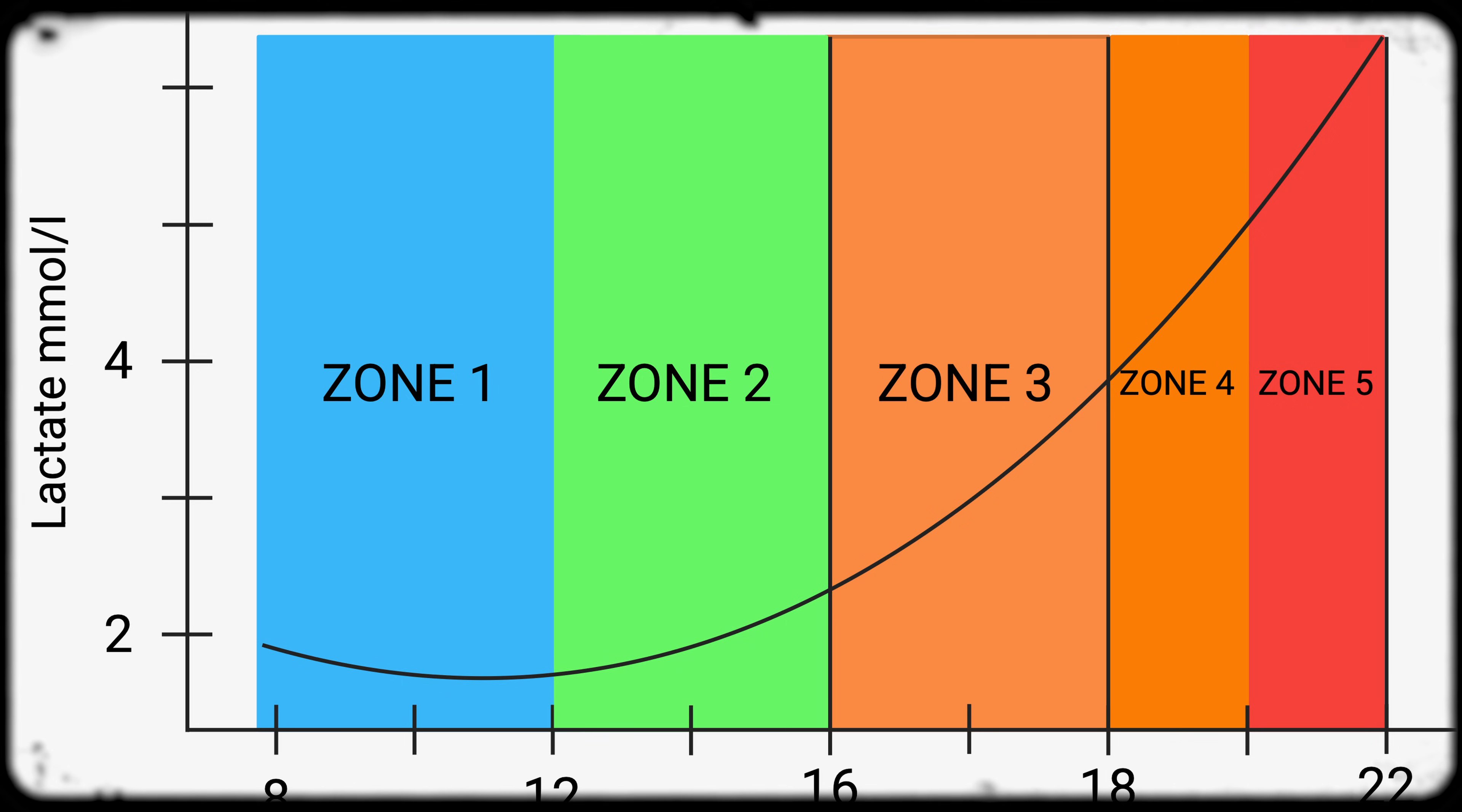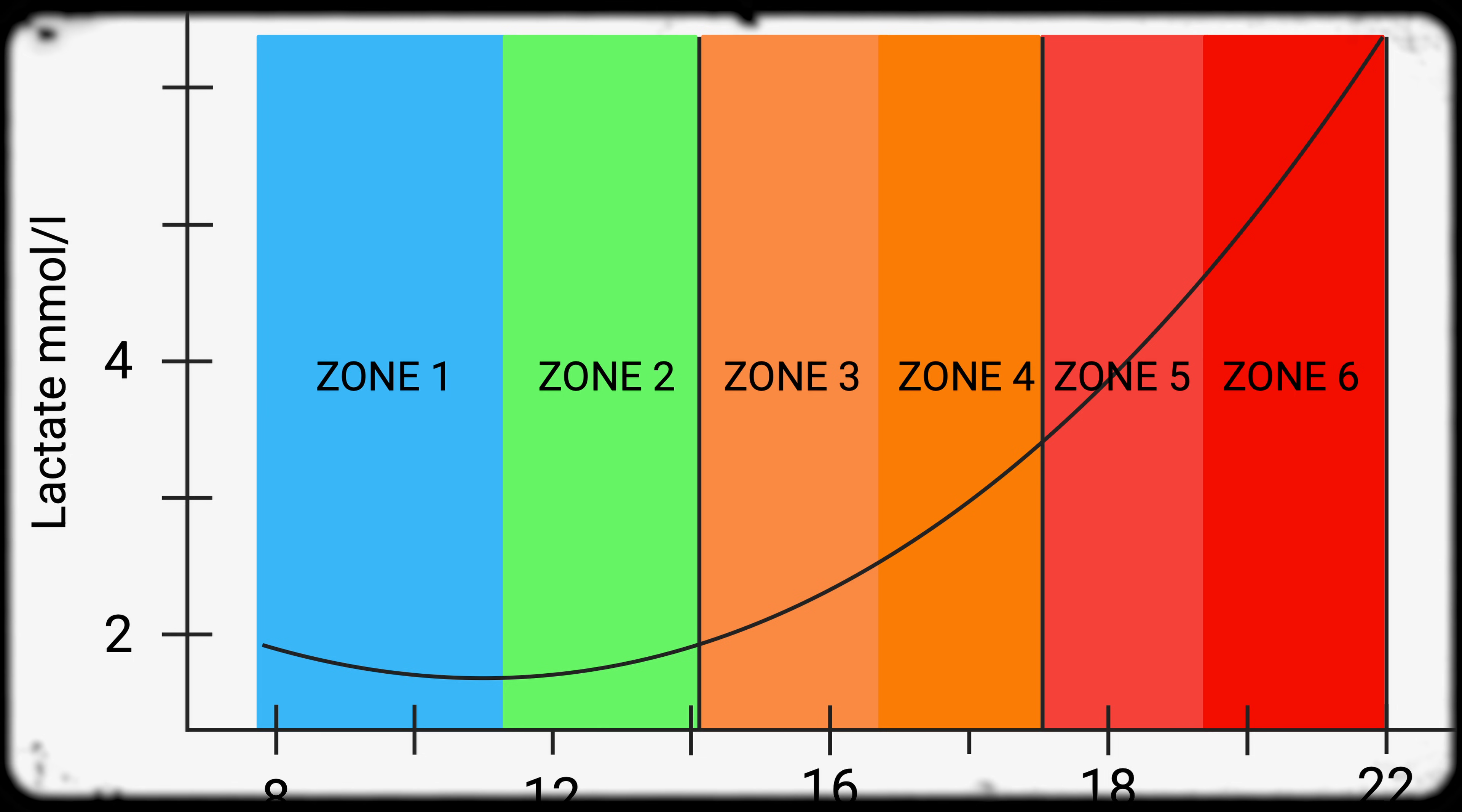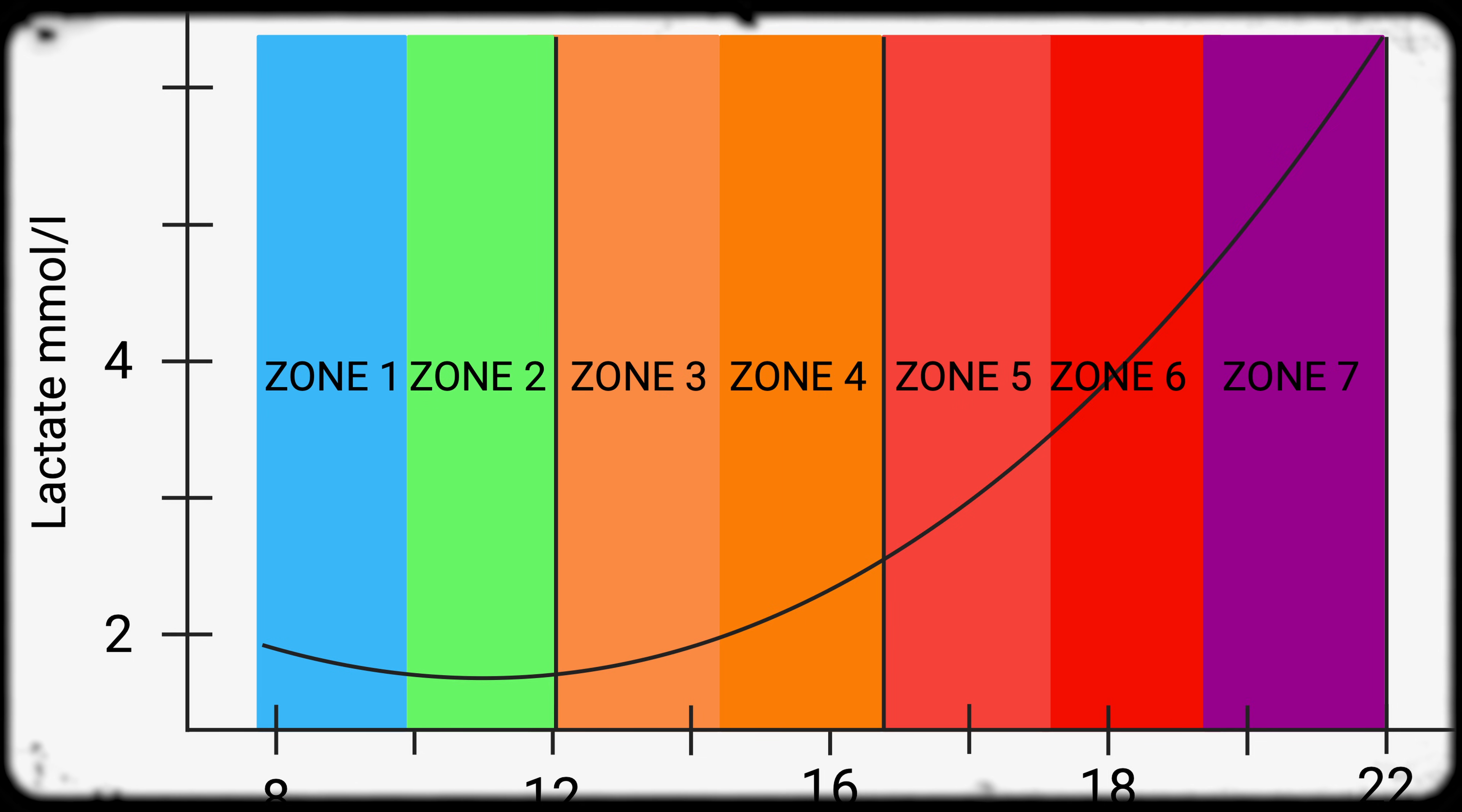Social media has popularized training zones, especially zone 2. But what if I told you that zone 2 is completely made up? If that wasn't bad enough, it gets even worse because there are multiple interpretations of the same zone model. Some people decided to create the 6 and 7 zone training models, which are simply confusing and highly inaccurate.